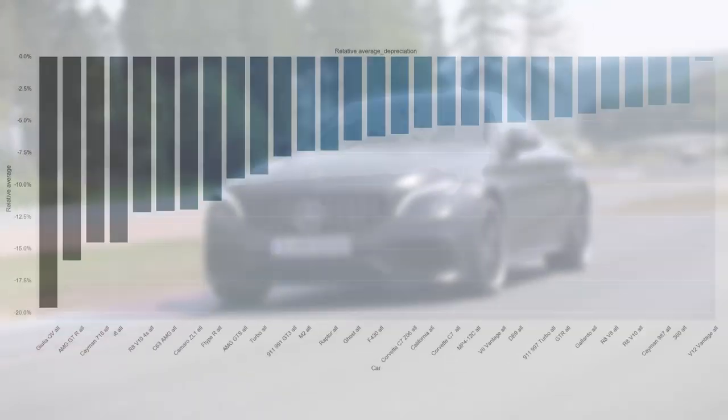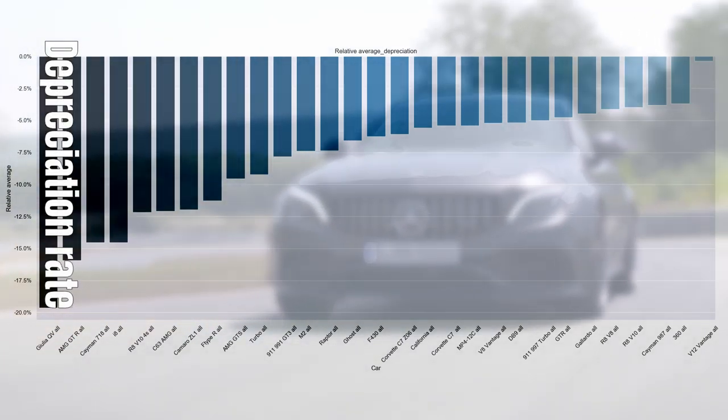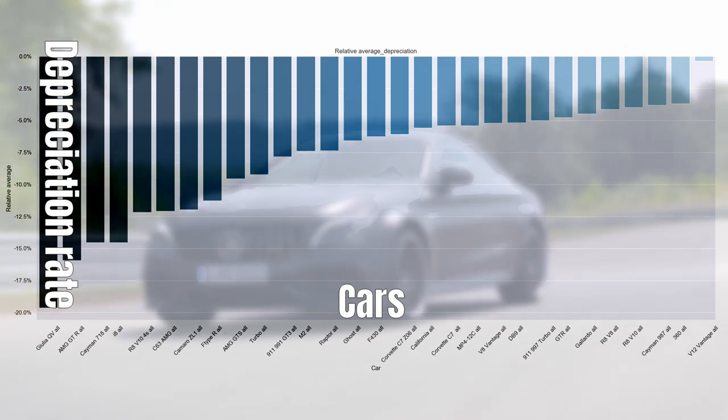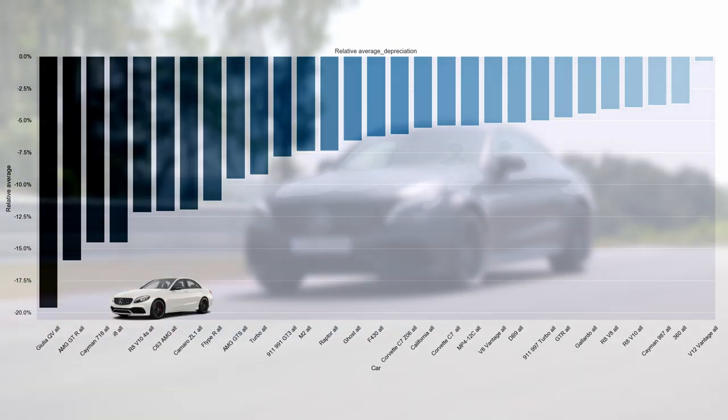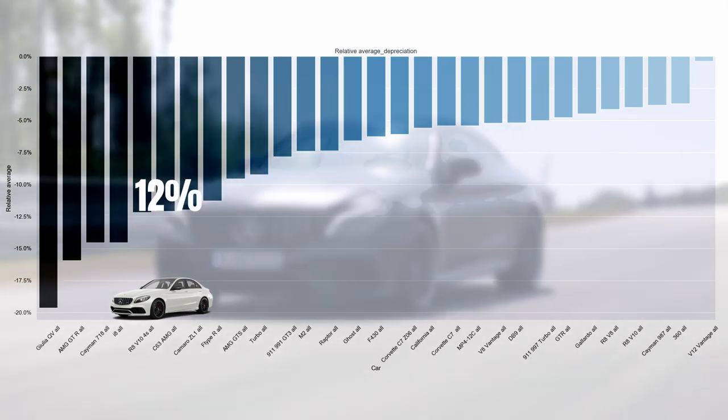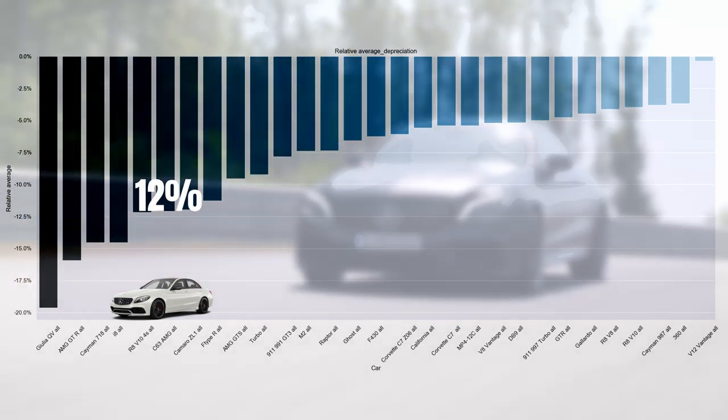And not just any leaderboard, but the leaderboard based on the relative average depreciation rate. That rate is now displayed on the vertical axis while we have the different cars on the horizontal axis. If we find the C63 over here, we can see that it actually has quite a bad ranking. It's positioned all the way at the bottom of the leaderboard with a score of 12%.